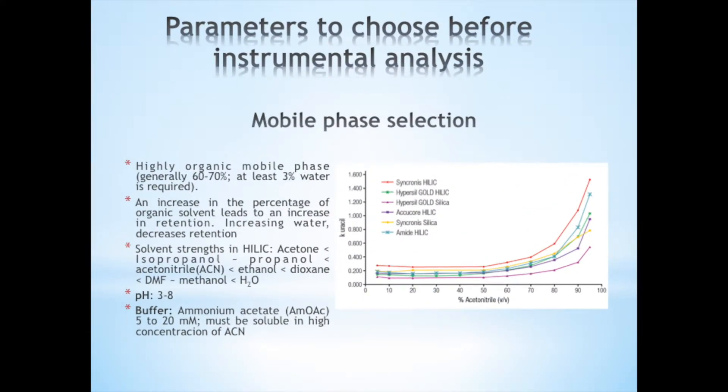Typical eluents for HILIC consists of 60 to 97 percent acetonitrile in water, or a volatile buffer. To obtain reproducible results, at least 3 percent water should be maintained in the mobile phase. This amount of water is necessary in order to ensure sufficient hydration of the stationary phase particles. Also, remember that a higher concentration of organic solvent in the mobile phase will increase the retention time.